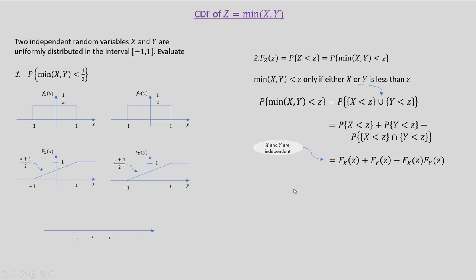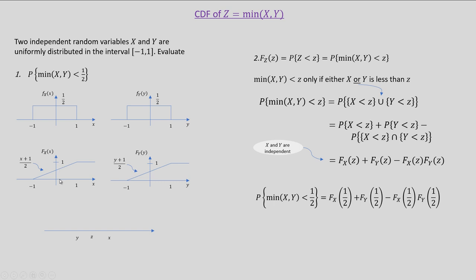Now let us evaluate the numerical example. We are asked to evaluate the probability that minimum of x comma y is less than one half. This is the CDF of the transformation with z replaced by one half. So this equals F_x(1/2) plus F_y(1/2) minus F_x(1/2) multiplied by F_y(1/2). F_x(1/2) is the value of the CDF at x equal to one half, which equals 3/4, and similarly F_y(1/2) is also 3/4.